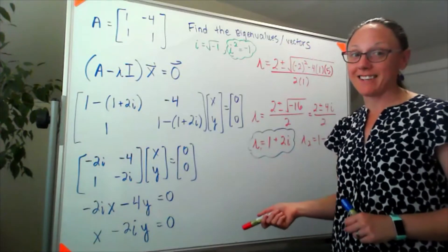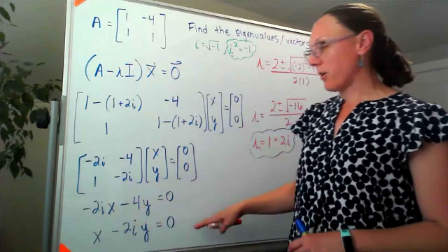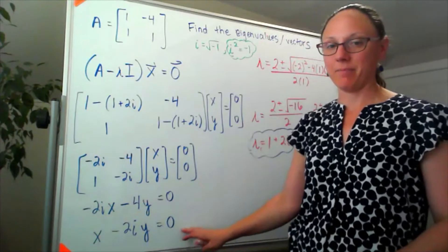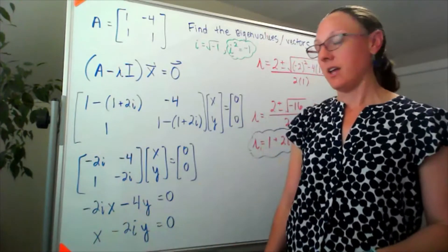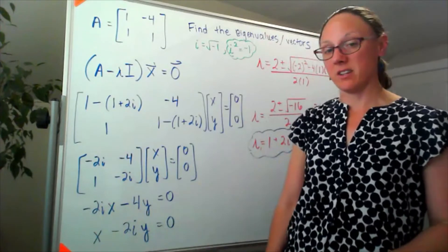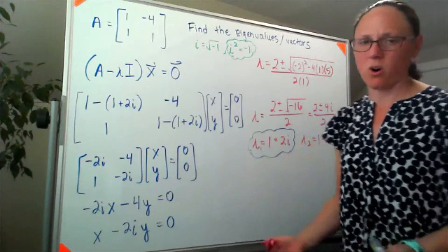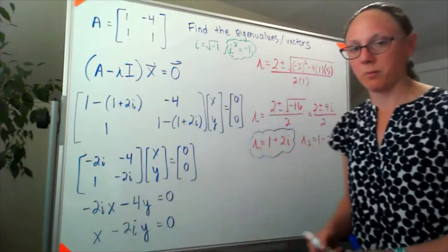So if I'm looking at these two, I should be able to multiply the bottom row by something and turn it into the top row, and I can if I multiply through by negative 2i the bottom row will turn into the top row. So I'll just work with the bottom row because the numbers are smaller. Let's work with the bottom row.